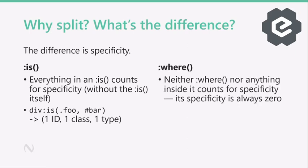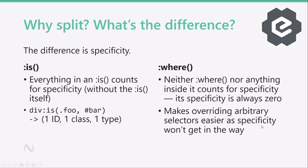As for the `:where()` pseudo-class, it has no specificity — it's always zero. That means in our example, if we change `:is()` to `:where()`, the specificity is only the `div` type selector. And this makes overriding arbitrary selectors easier. For example, if we have a series of link styles — `a:link`, `a:visited`, `a:hover`, `a:active` — and we want to apply a different style to navigation links, `nav a` has less specificity because it doesn't have the class. So using `:where()` with the link pseudo-classes makes this easier to override.